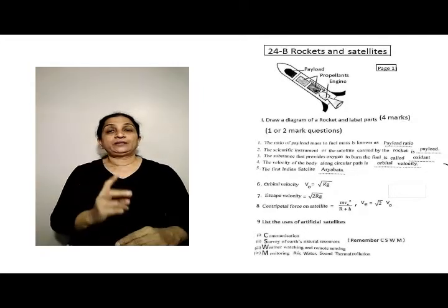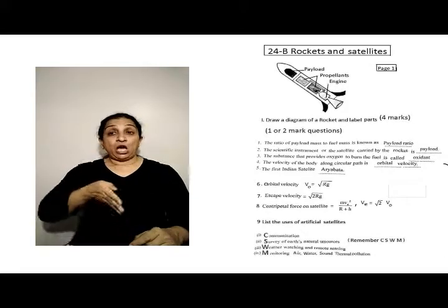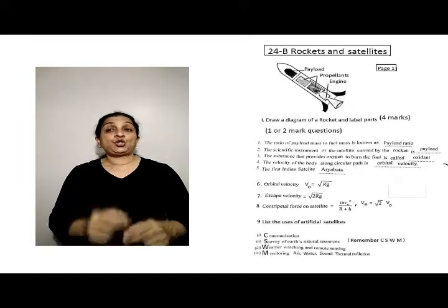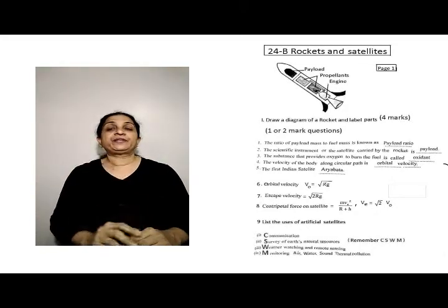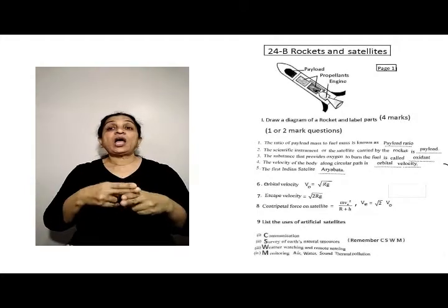Fourth one, the velocity of the body along a circular path is called orbital velocity. Fifth, the first Indian satellite Aryabhata.